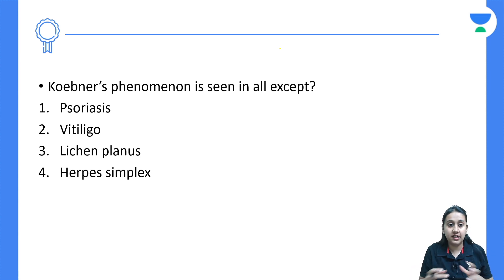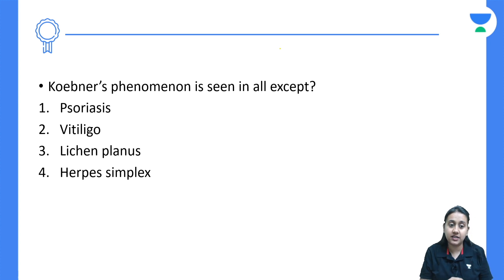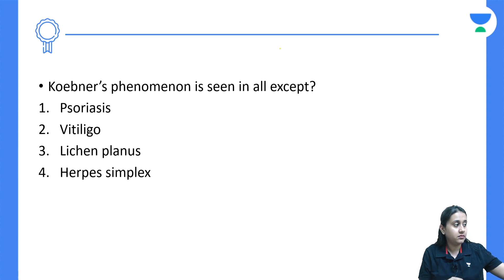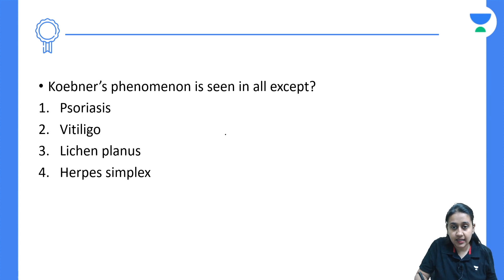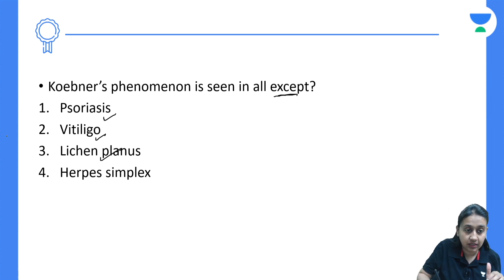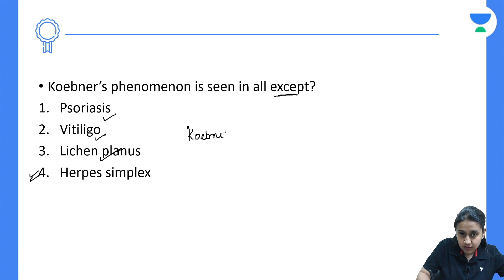Starting with the first question in FMG 2022: Koebner's Phenomenon is seen in all except — psoriasis, vitiligo, lichen planus, or herpes simplex? The correct answer is herpes simplex, since it does not show Koebner's Phenomenon. Psoriasis, vitiligo, and lichen planus all have Koebner's. Now, what is Koebner's or isomorphic Phenomenon?